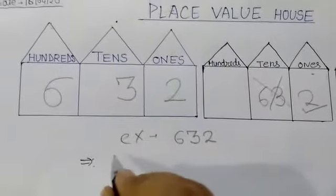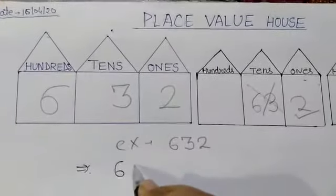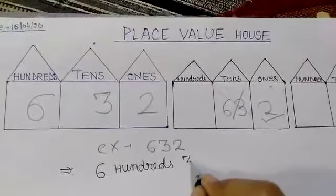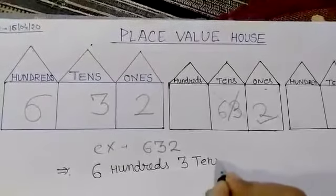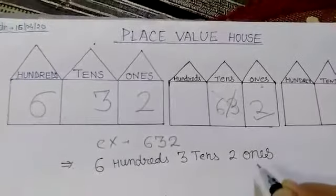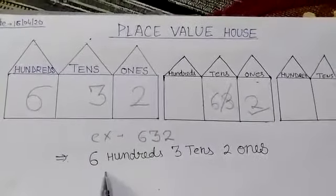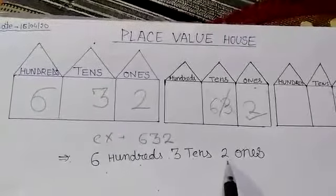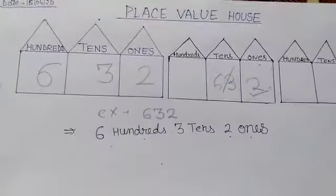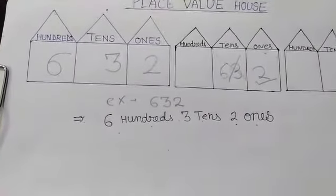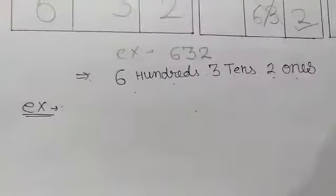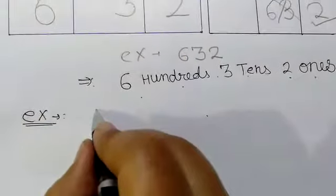Now, if we have to write this as place value, how will we write it? I will show you by writing. So students, we will go with one example. Suppose, our example is seven, three, nine.